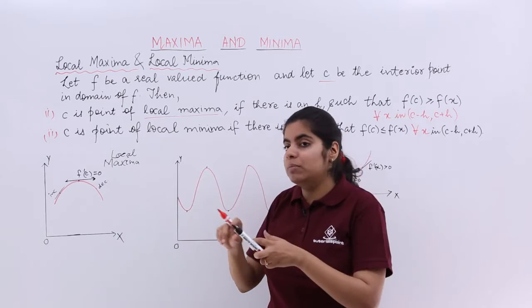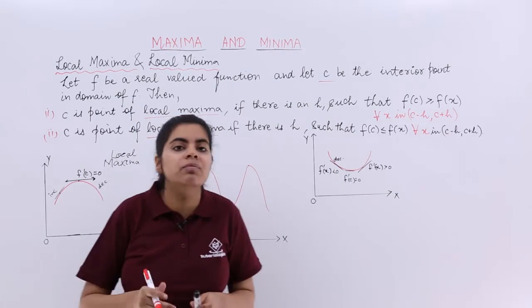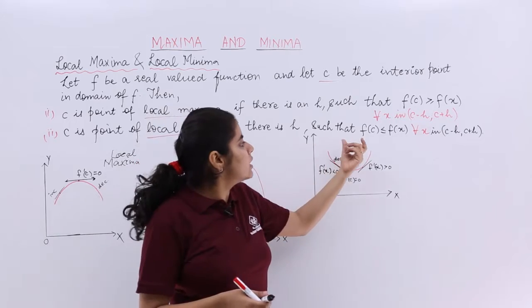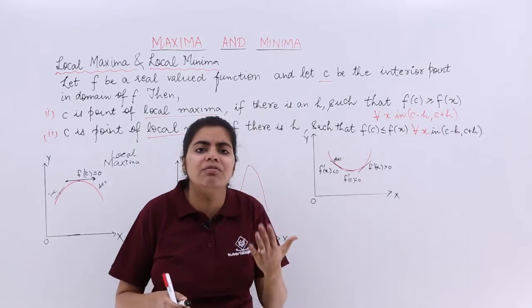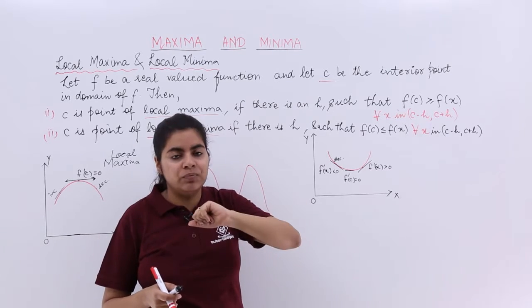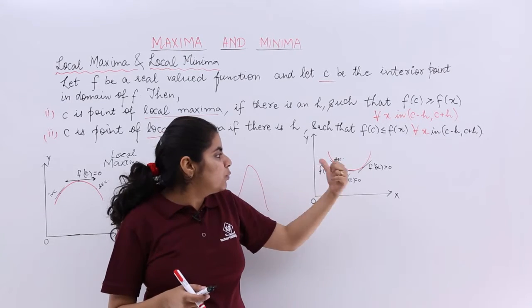When c is a point of local minima that we have to study with the definition, it says if there is h greater than 0 such that f of c less than equal to f of x. That means when c is having the value such that it will give me the least value. So least value would be given.